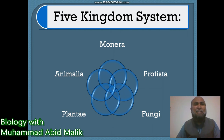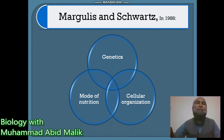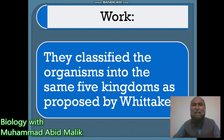There was a little bit of modification made by Margulis and Schwartz in 1988. They added genetics to the classification criteria — so cellular organization and mode of nutrition, along with genetics, were included. Now the Five Kingdom system is based on three segments: genetics, cellular organization, and mode of nutrition. However, the five main kingdoms proposed by Robert Whittaker remained the same in this modified system.